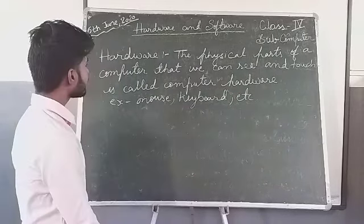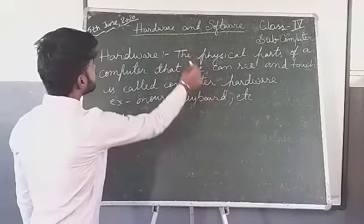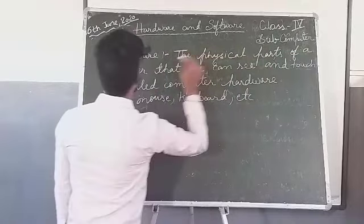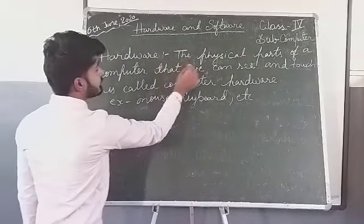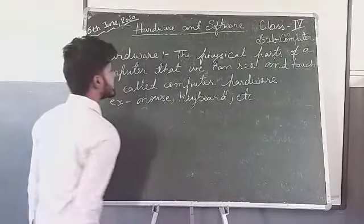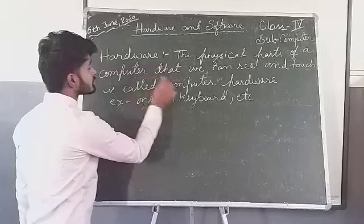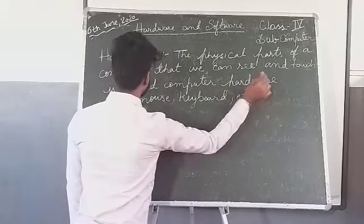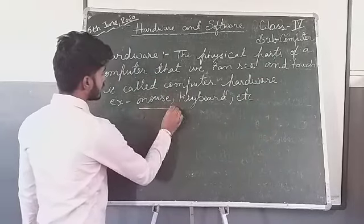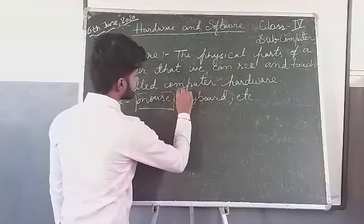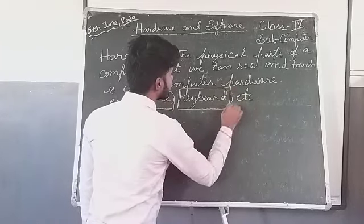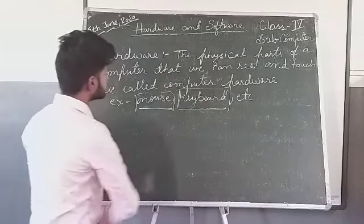So what is hardware? The physical parts of the computer that we can see and touch is called computer hardware. For example, mouse, because we can see and touch it. And keyboard.